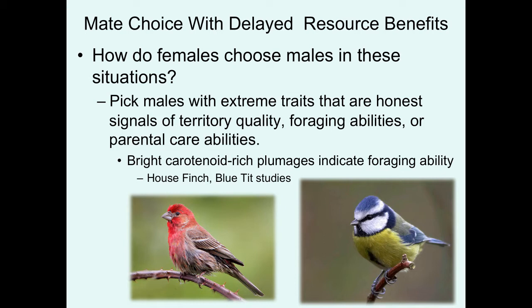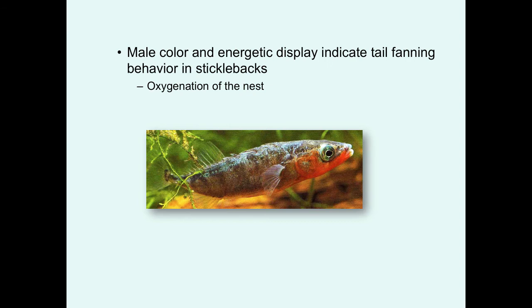Many studies have indicated that bright carotenoid-rich plumages in birds are indicative of better foraging ability. This has been demonstrated in house finches and blue tits. Male color and energetic waggle displays indicate tail fanning behavior in sticklebacks, and tail fanning behavior is important because males are the ones who guard nests of young — much of their parental care involves fanning the nest to oxygenate it. So the active wiggling display and bright red coloration are a very good correlate females can use to differentiate poor fan-quality males versus high fan-quality males.